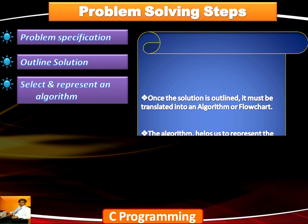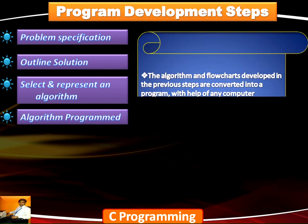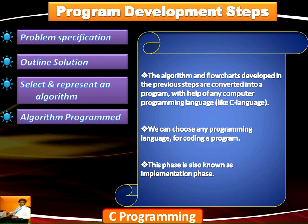We need to convert the algorithm into a program. The algorithms and flowcharts that we have developed need to be converted into a program with the help of any computer programming language like C, C++, Java, or anything. The programming language chosen is programmer-dependent. This phase is the implementation phase — we are implementing the algorithm designed for the respective problem.